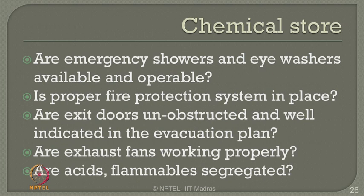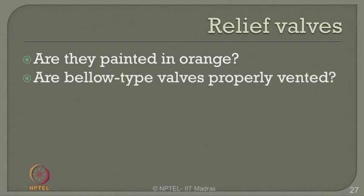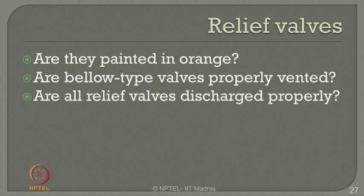Are acids and flammables segregated in the chemical store? That is very important because they have different chemical characteristics. Regarding relief valves — we consider mechanical systems as default safeguards, but this is not always the case in recent accidents. Are relief valves painted properly, for example in orange? Are bellow-type valves properly vented? If venting is shut down by mistake, these valves do not operate successfully. Are all relief valves properly discharged? That should be checked periodically.